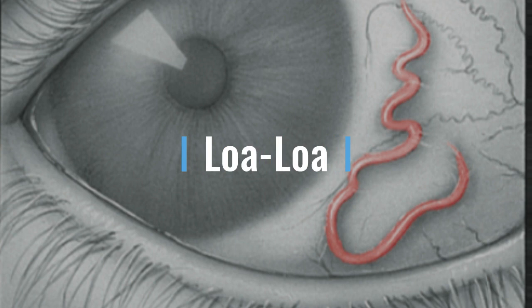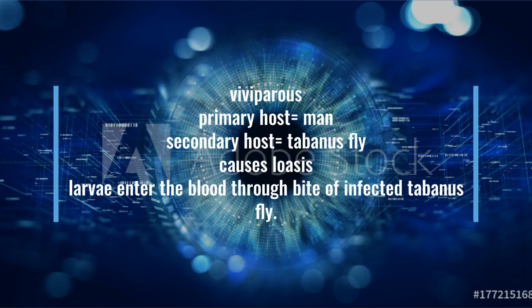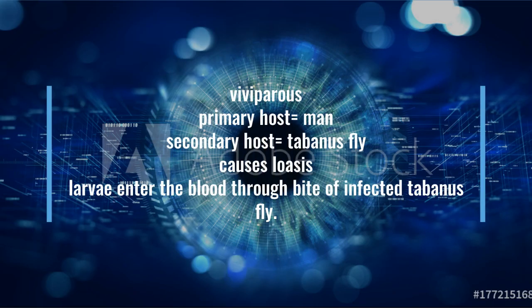Now we have a new worm called Loa loa, also called the eye worm. It is viviparous and digenetic — it has two hosts. The primary host is man and the secondary host and vector is the Tabanid fly, because the worm is transmitted through this fly. The disease it causes is loiasis.